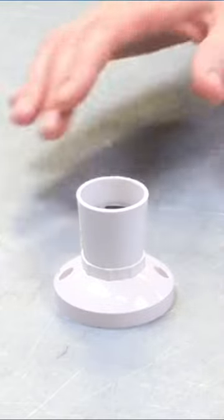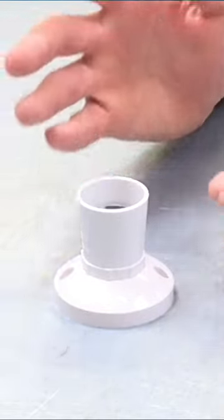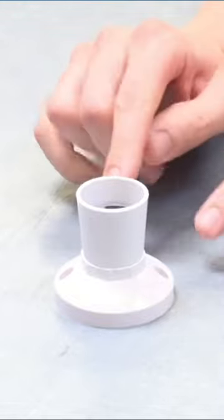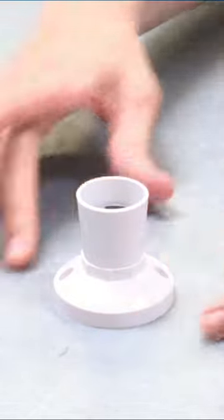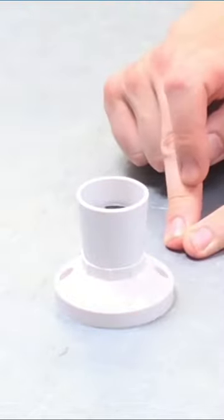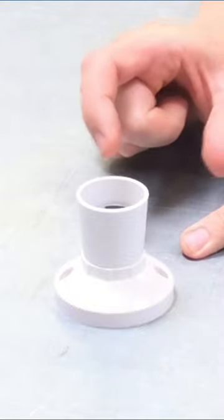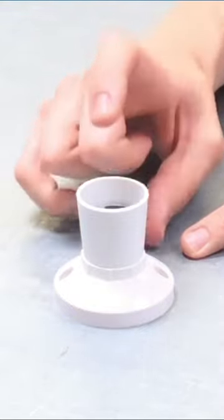So again, you can see a slight difference from before. Once again, we've not got a flex, so this isn't a pendant, but we've lost the ceiling rows. We don't have that large base on the bottom where we can make electrical connections. We've got a very small base, so this is a batten lamp holder with a straight skirt.